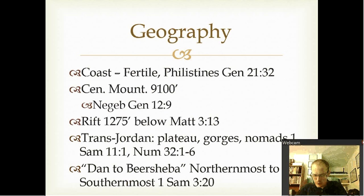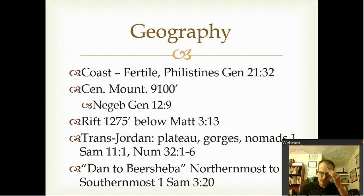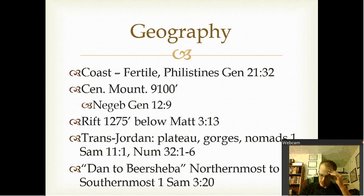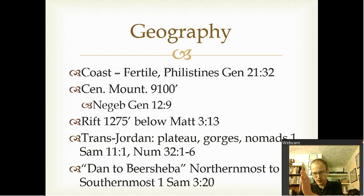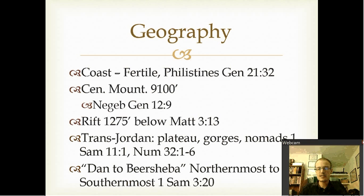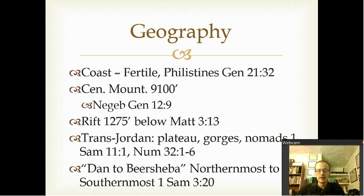Numbers 32:1-6 details how the two and a half tribes wanted to stay in the Transjordan. 'The sons of Reuben and the sons of Gad had an exceedingly large number of livestock. So when they saw the land of Jazer and Gilead, that it was indeed a place suitable for livestock, the sons of Gad and Reuben came and spoke to Moses.' They basically settled on the east side of the Jordan River. Throughout the Old Testament when it says 'from Dan to Beersheba, all of Israel,' it just means from the northernmost to the southernmost — Dan was extreme north, Beersheba was extreme south.